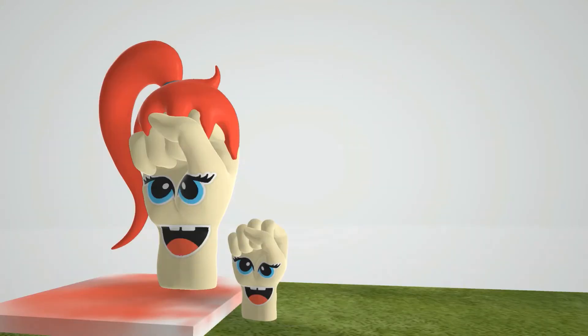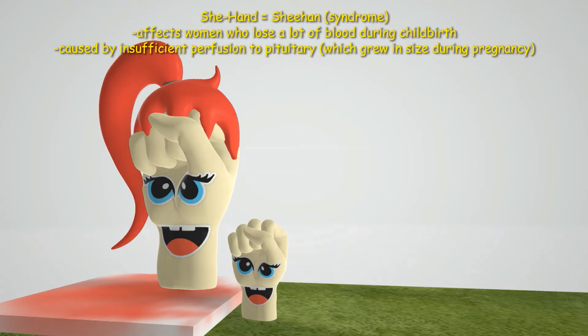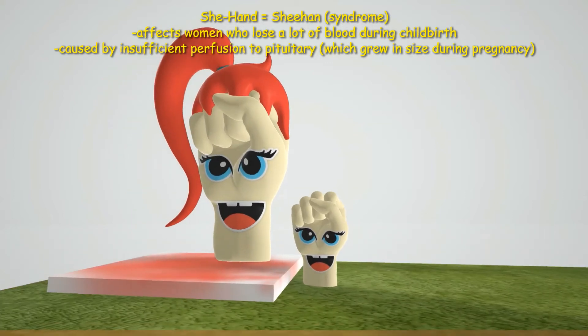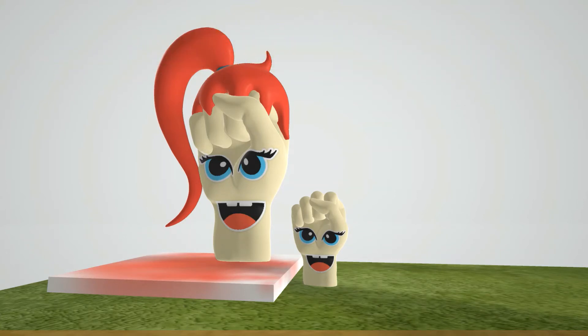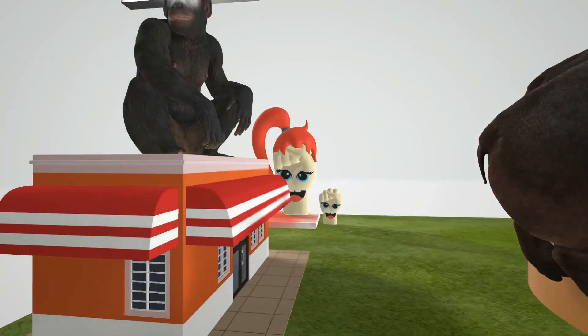On second base we have the 'she hand' — for Sheehan syndrome. Sheehan syndrome is a condition affecting women who lose a life-threatening amount of blood during childbirth. During pregnancy the pituitary doubles in size because it's releasing so many hormones, but the vessels supplying it do not increase in size. So a decrease in blood from childbirth can cause an infarction in the pituitary, known as Sheehan syndrome.